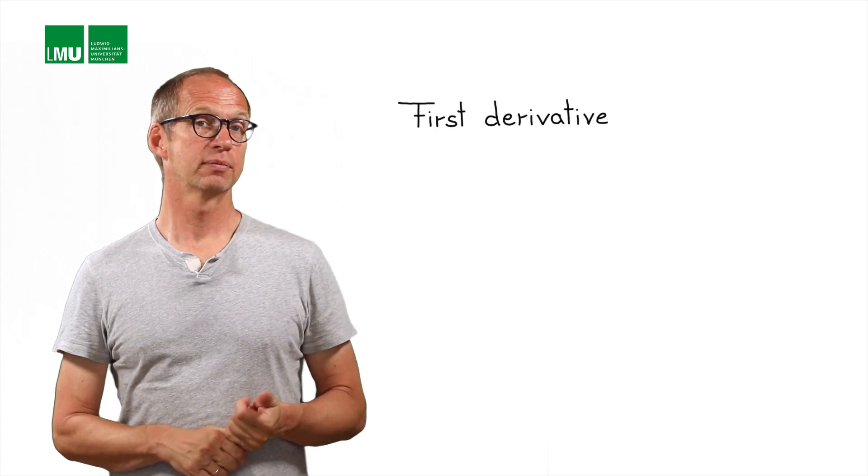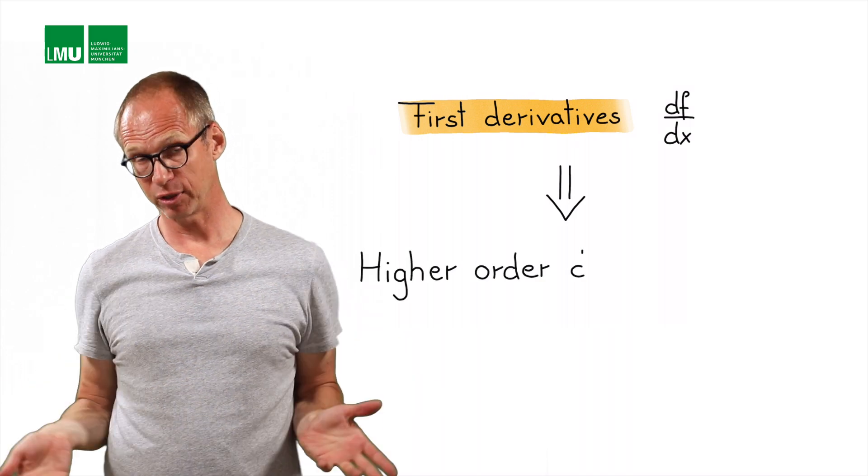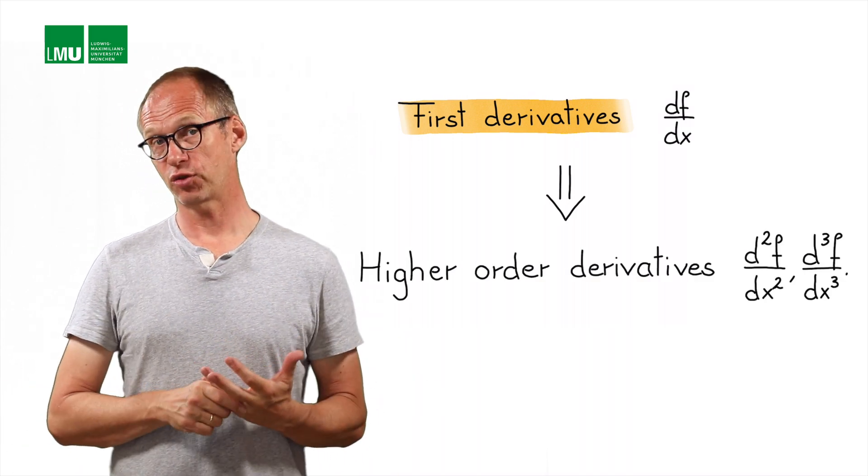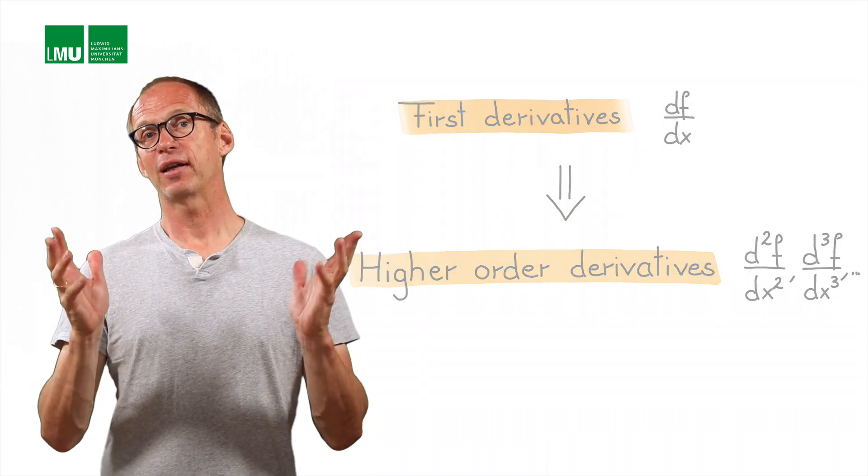So we learned the way of approximating first derivatives. But sometimes, actually quite often, we also have higher derivatives—second, third derivatives—in the equations describing our physical phenomena. So what about that situation?